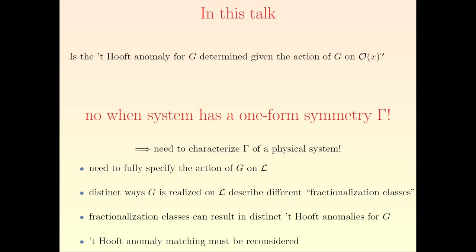This is something to keep in mind because usually in 't Hooft anomaly matching you want to compare the anomalies of some short-distance theory to some long-distance theory. You may incorrectly discard a proposed infrared dynamic because the zero-form anomalies don't match, but you might have been comparing them in different fractionalization classes. The more refined statement is that you should match 't Hooft anomalies in all fractionalization classes. There is no canonical choice of fractionalization class, so you really have to compare them across all of them.